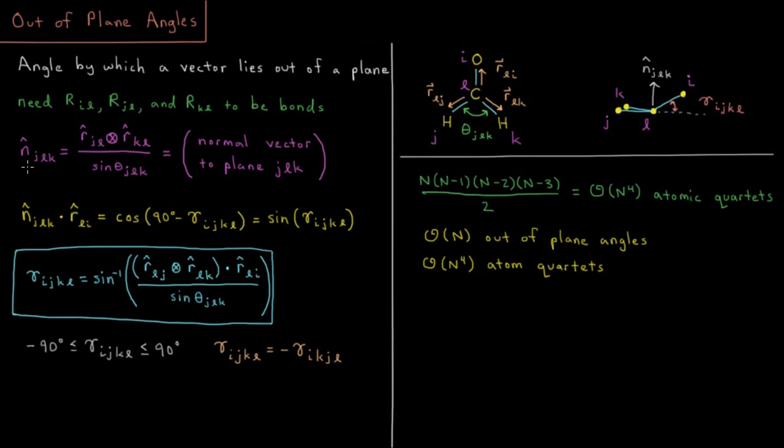From our previous video on torsions, we discussed how to get a normal vector to a plane. We have plane jlk and we want to get this normal vector n-hat jlk, which is a unit vector with a magnitude of one, perpendicular to this plane. To do that, we take the cross product of unit vectors jl and kl, divide that by sine of theta jlk, and that will give us the normal vector to the plane jlk.